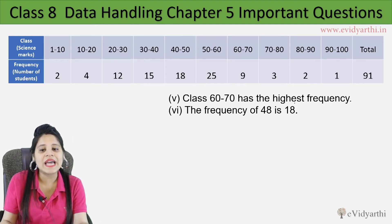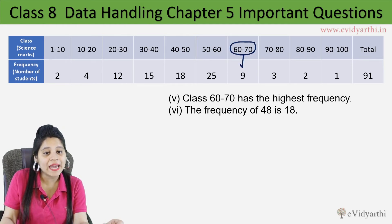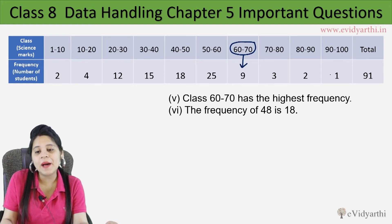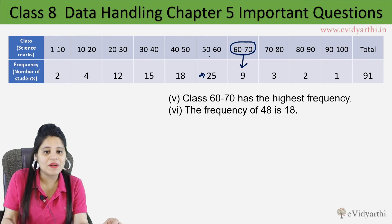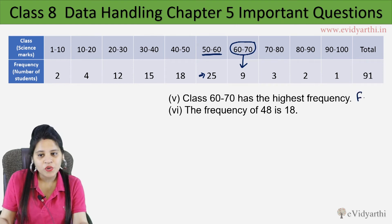Next we have 5th part. Class 60 to 70 has the highest frequency. 60 to 70 class, what is this frequency? 9. So if we look here, who is the highest frequency? 25. That means that 50 to 60 is the highest frequency. So this one is false.